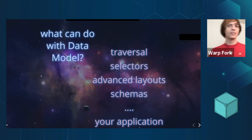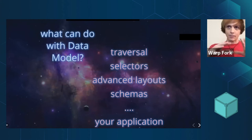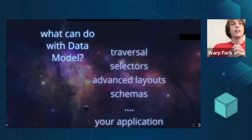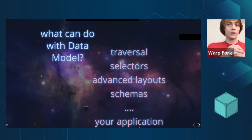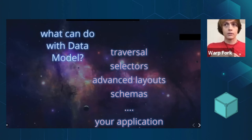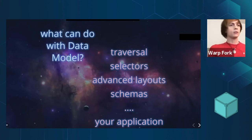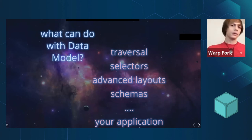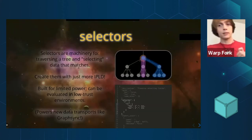So what kind of stuff? Lots of stuff. The most common thing is just to have a library which can traverse these data structures programmatically. We've also built higher-level features on top of this — for example, something called selectors, which is a declarative model for making traversals happen. There are also features called advanced layout schemas. But in general, what can you do with the data model? Build applications that are based on structured data and want to be decentralized.